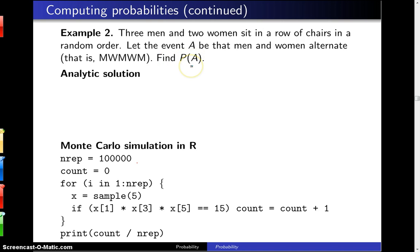In the same way we did in the previous example, we want to consider equally likely outcomes. The denominator here will be how many ways can three men and two women sit in any order. By the multiplication rule, there are five ways to put someone in the leftmost chair.